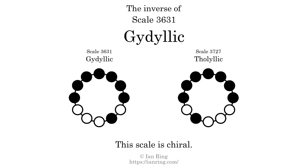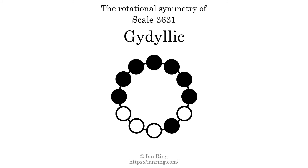The inverse of a scale is a mirror image — it is what you get when the sequence of intervals is reversed. The inverse of this scale is scale 3727, also known as Thalilic. This scale is chiral; it cannot transform into its inverse by rotational transformation. This scale has no rotational symmetry.